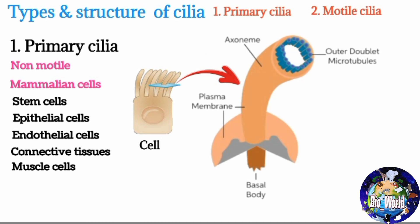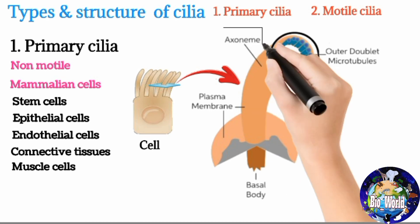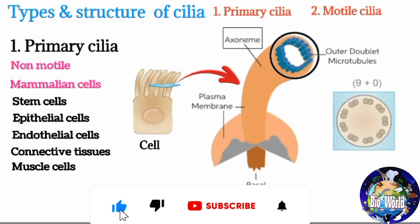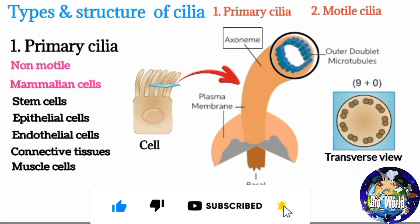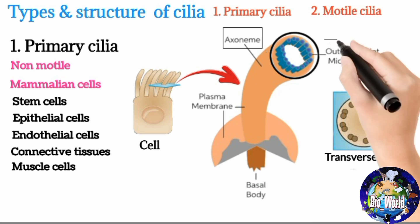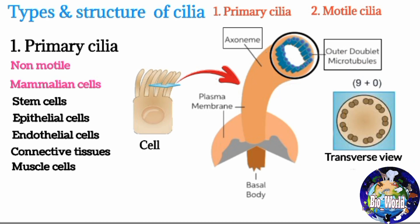If we observe a primary cilium under a microscope, the ring structure of microtubules in the cilia is called the axoneme. Primary cilia have a nine-plus-zero arrangement of microtubules in the axoneme, meaning there are nine pairs of microtubules — called doublet microtubules — in the axoneme. Primary cilia lack the central microtubules, which are responsible for the motility of cilia.